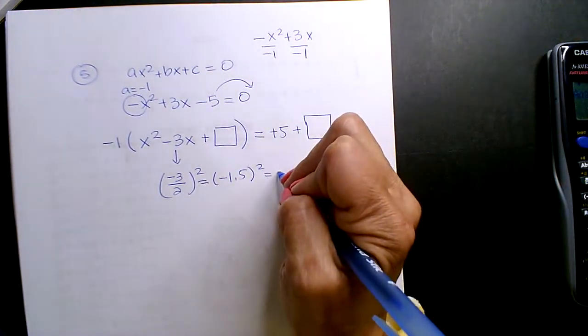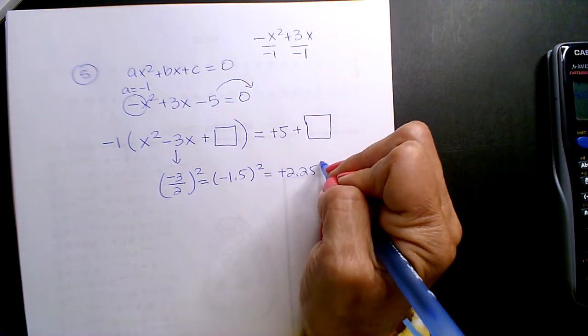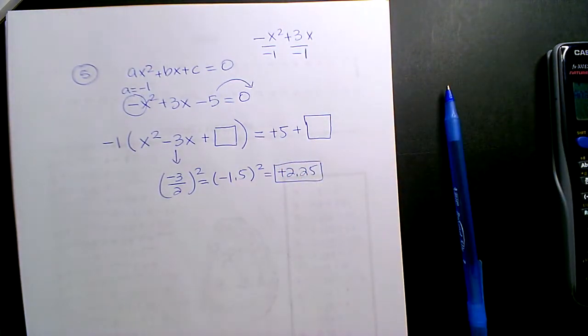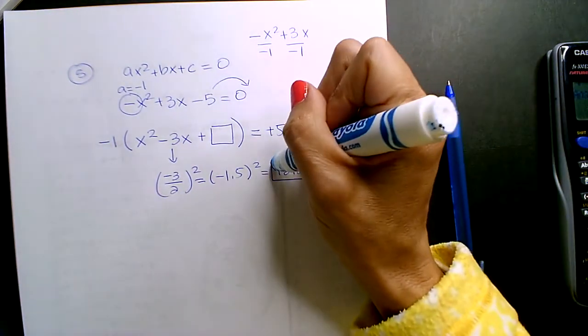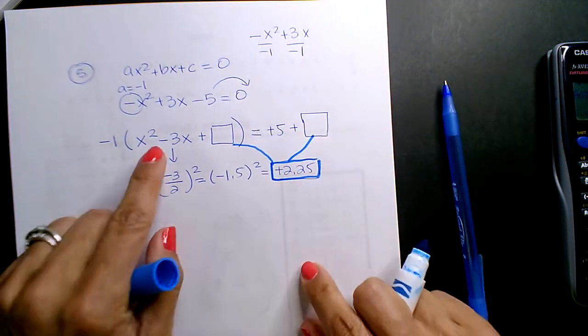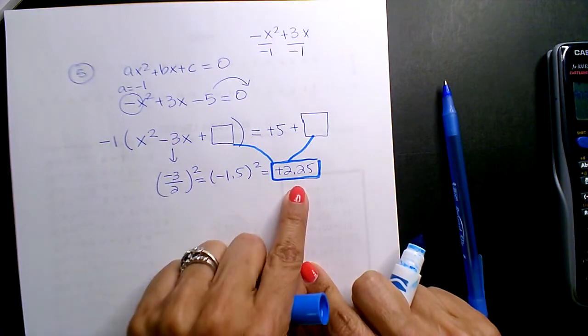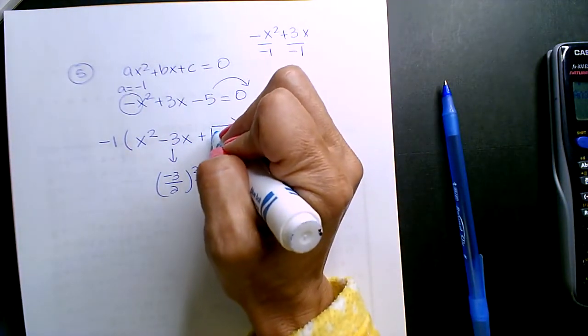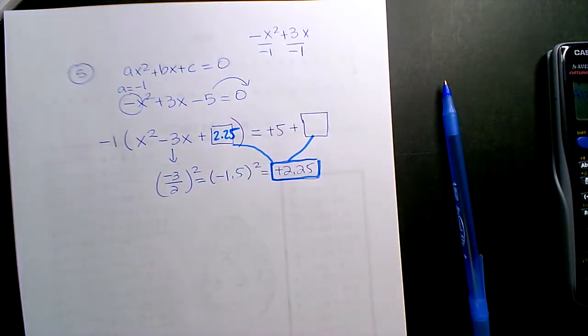So this is now positive 2.25. Remember, that's the square. But hold on you guys, I'm going to change it. Okay, typically that goes inside. So because I took that B value, this is in fact a 2.25. However, this one...